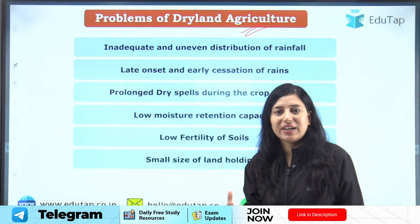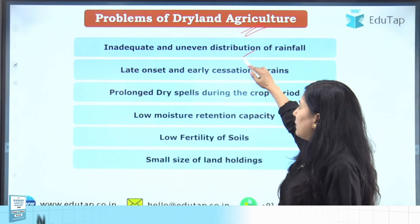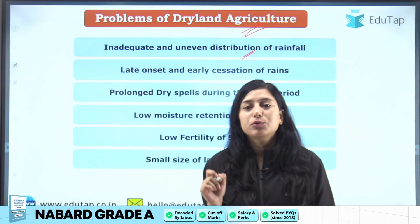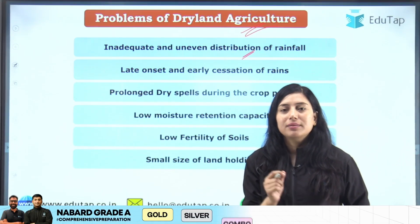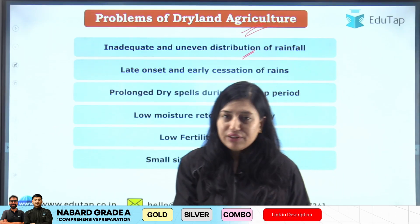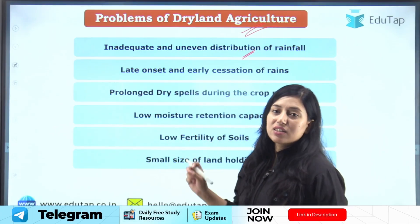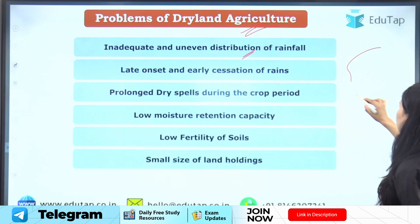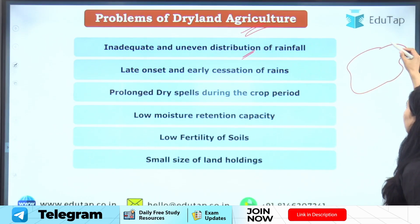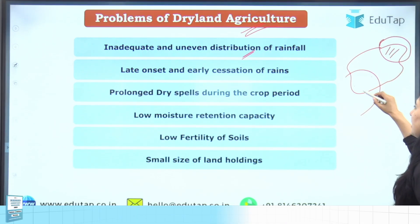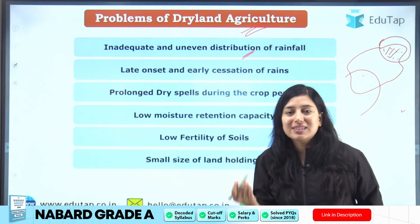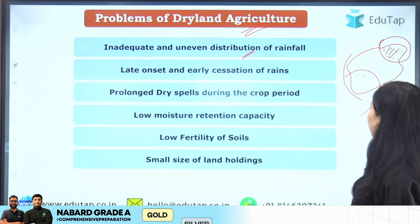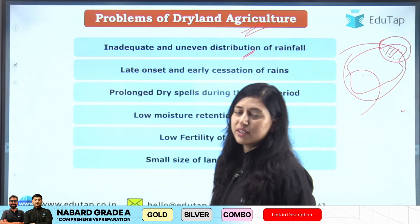Now let's move to the problems of dryland agriculture. The very first problem is inadequate and uneven distribution of rainfall. In such areas, rainfall is either not enough or it is unevenly distributed — one part of the region may receive more rainfall while another receives less. This uneven distribution is not desirable since we need even rainfall over the entire area.